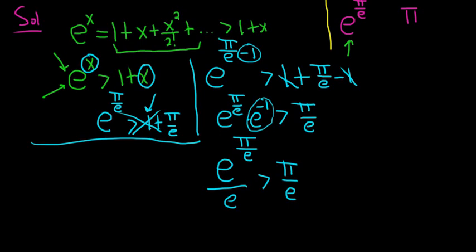Now we can multiply both sides by e. Things are coming together. Good stuff. So this is going to be e^(π/e) greater than π.